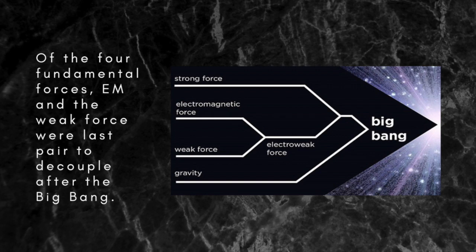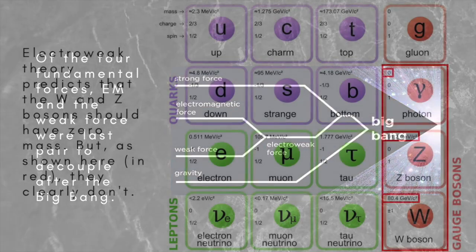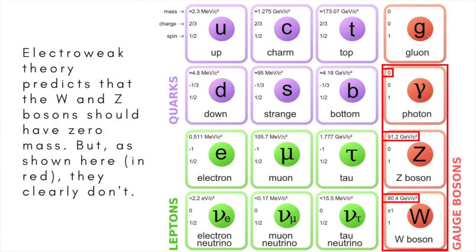Electroweak theory also provided the basis for what's become known as the Standard Model. The equations of electroweak theory correctly described the particles that carry the electroweak force — photons in the case of electromagnetism, and the W and Z bosons in the case of the weak force — except for one glaring problem. The theory predicts that all these particles should have zero mass. The photon does have zero mass, but the W and Z bosons are each about 100 times as massive as the proton. That seems to be a bit of a problem.